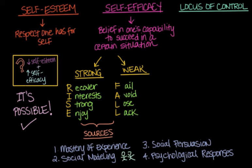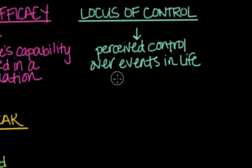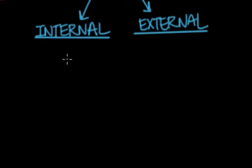Now let's move on to our last term: locus of control. Locus of control is the extent to which people perceive they have control over events in their lives. There are two types: internal and external locus of control.